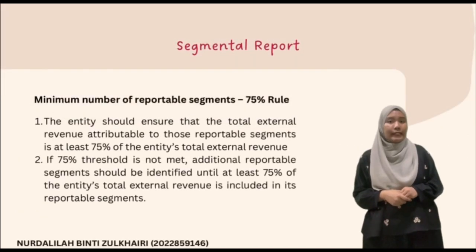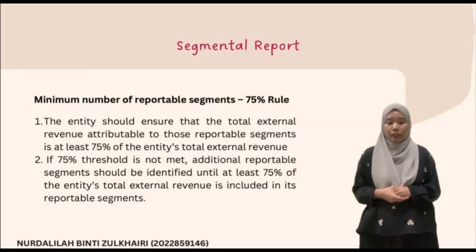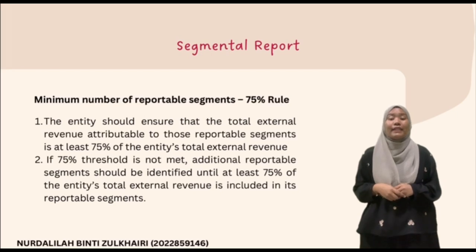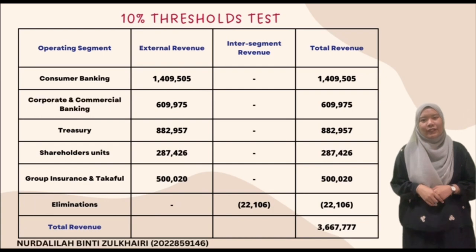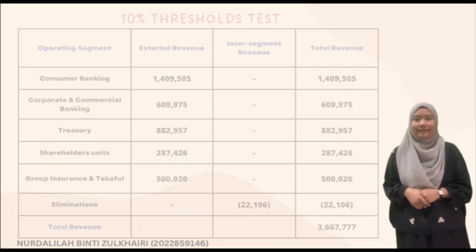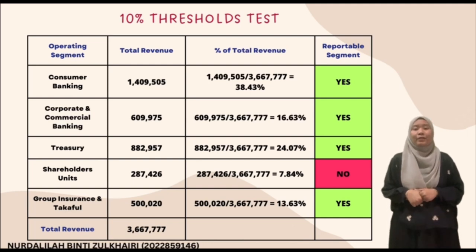There is a minimum number of reportable segments under the 75% threshold test. First, the entity should ensure that the total external revenue attributable to those reportable segments is at least 75% of the entity's total external revenue. If the 75% threshold is not met, additional reportable segments should be identified until at least 75% of the entity's total external revenue is included. The table shown displays the external revenue and inter-segment revenue of the five operating segments of Bank Islam Malaysia Berhad, with total revenue of RM3,667,777. The 10% threshold is calculated by dividing each segment's total revenue by the combined revenue of all segments and multiplying by 100%. If it exceeds 10%, it is a reportable segment; if not, it is a non-reportable segment.